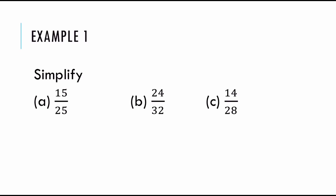Let's go over example one. I'm looking for the biggest number that goes into fifteen and twenty-five, and that number is five. So I divide the top and the bottom by five. Five goes into fifteen three times, and it goes into twenty-five five times. I need to check that three over five is indeed in its simplest form by checking: is there a number greater than one that goes into three and five? No, there is not, so it is indeed in its simplest form.